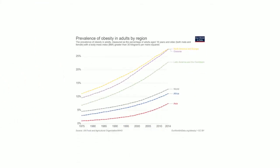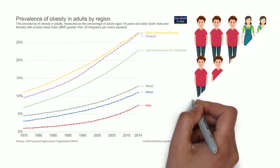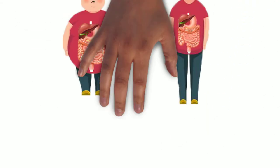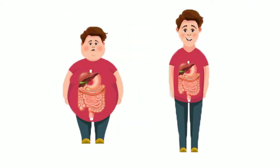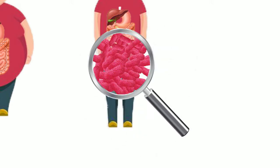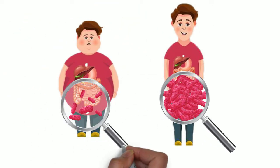Obesity is a global epidemic — every one in ten adults is obese. Bacteroidetes, especially Bt, is found in abundance in slim human guts, but in little abundance in obese humans.